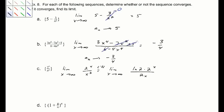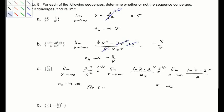Applying L'Hôpital's rule again gives the natural log of 4 times 2^x over 2, which goes to infinity. This means a_n diverges — the sequence diverges to infinity.